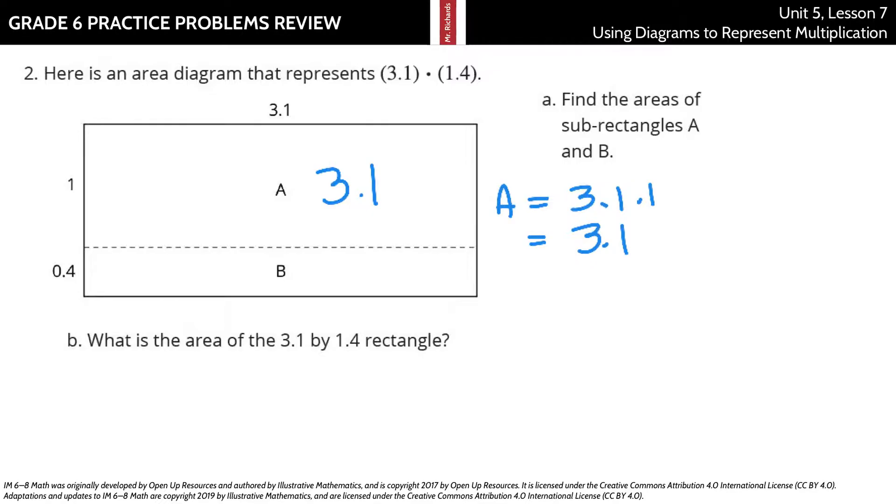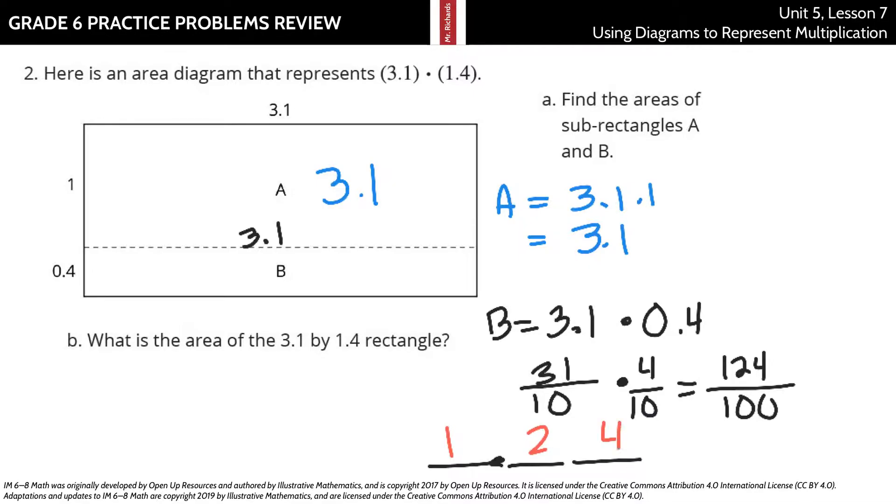For B, this piece of it is 3.1, so we're going to take that 3.1 times the 0.4. Then 3.1 is the same thing as 31 tenths times 4 tenths. So 31 times 4 is 124, 10 times 10 is 100, so we have 124 hundredths.